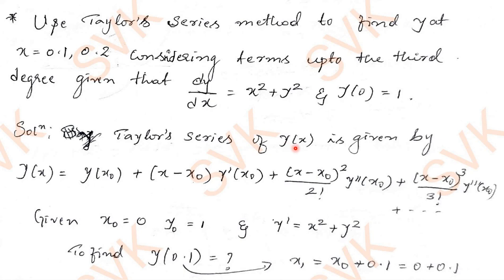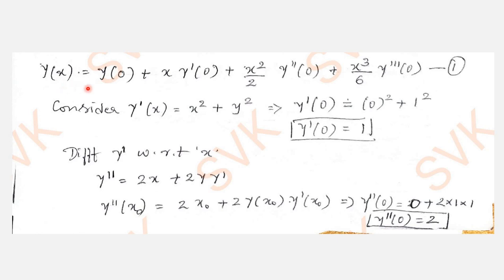First, write down the Taylor series expansion: y(x) = y(x₀) + (x − x₀)·y'(x₀) + (x − x₀)²/2! · y''(x₀) + (x − x₀)³/3! · y'''(x₀) + ... Then write the initial conditions: x₀ = 0, y₀ = 1, and y' = x² + y². Substituting x₀ = 0 gives equation (1): y(x) = y(0) + x·y'(0) + x²/2·y''(0) + x³/6·y'''(0). Since the problem asks for degree 3, we stop here.